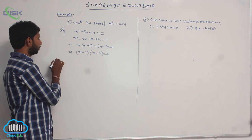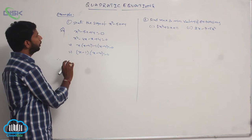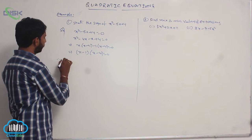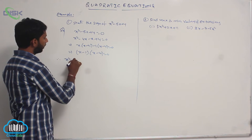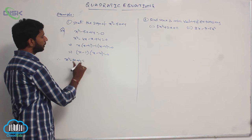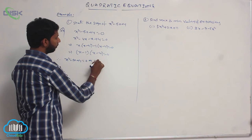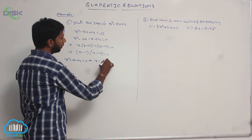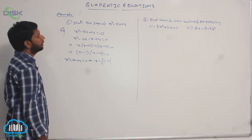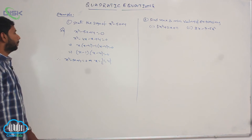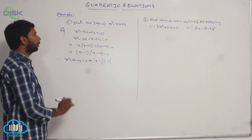The expression is 0 when x² - 5x + 4 = 0, that implies x = 1, 4. So the expression is 0 when x = 1 or x = 4.